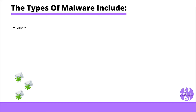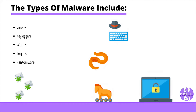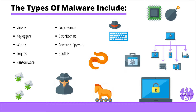The most common types of malware include viruses, keyloggers, worms, trojans, ransomware, logic bombs, bots or botnets, adware and spyware, and rootkits. Malware is often deployed through phishing emails. Threat actors send emails to employees containing links to websites or embedded attachments within the email itself. If an action is taken, such as clicking the link or downloading the attachment, the malicious code is executed, and you can consider yourself breached.